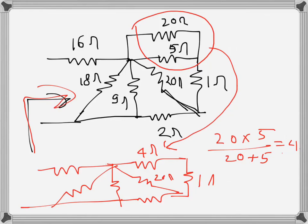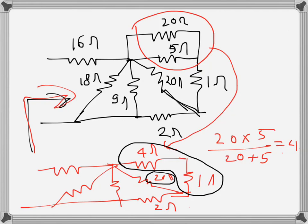Everything else remains the same — there's 1Ω and 20Ω. With this new circuit, we can see these two resistors are in series, and that whole series connection is in parallel with another resistor. So 4 plus 1 is 5Ω, and that 5Ω is in parallel with 20Ω.